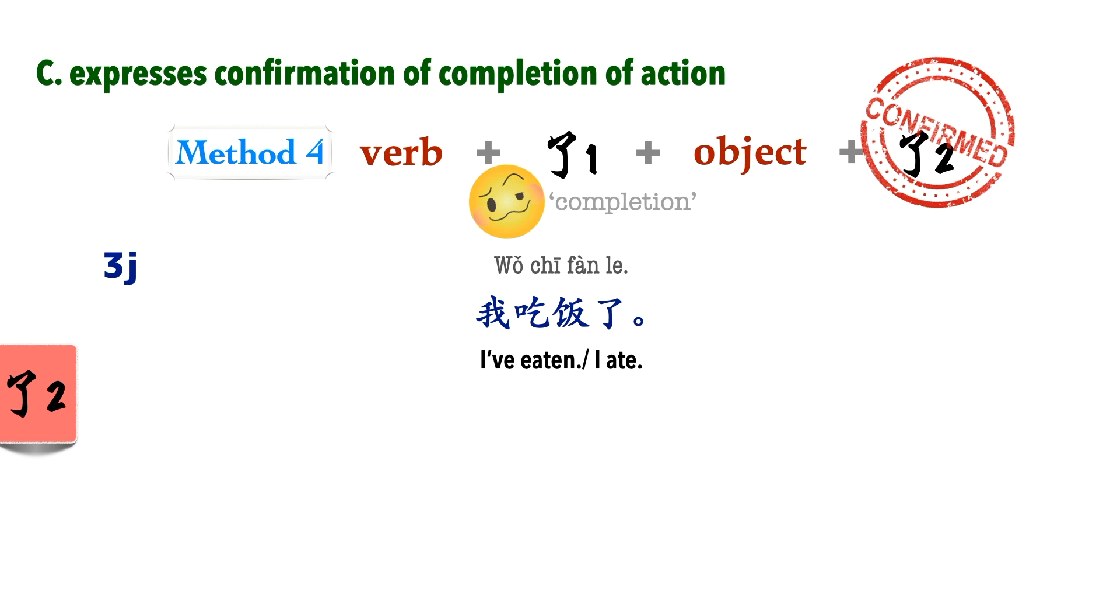So, how do we reconcile this with the feature of change? 了2 wraps up the whole sentence before it, indicating that this is a new situation that has emerged. The new situation now is that I've eaten. In English, the sentence is past, but, as I've been repeating, it does not mean past tense in Mandarin, even though it looks like the past tense. It basically confirms that an action has been completed, and this is the new situation. I know if this is the first time you're learning this, it might sound a little bit bizarre, and it might take a bit of time for this feature to really sink in.